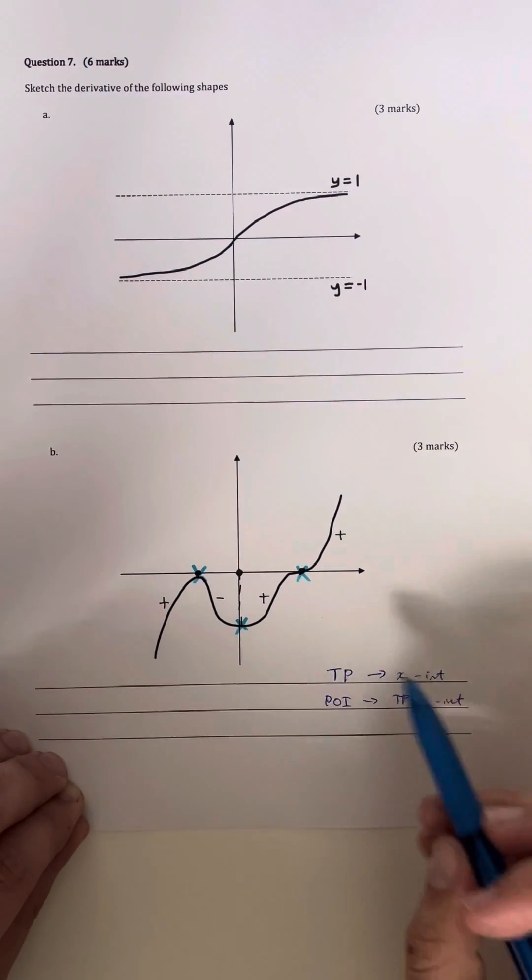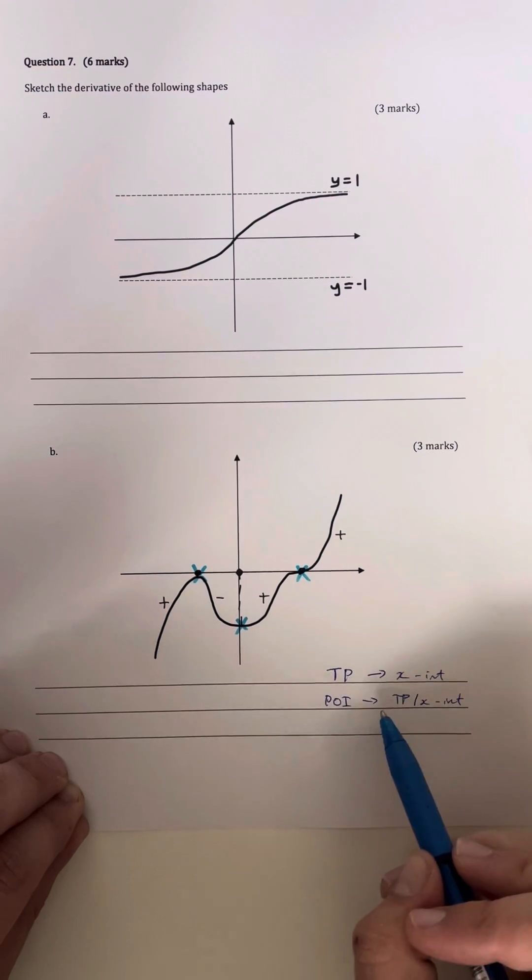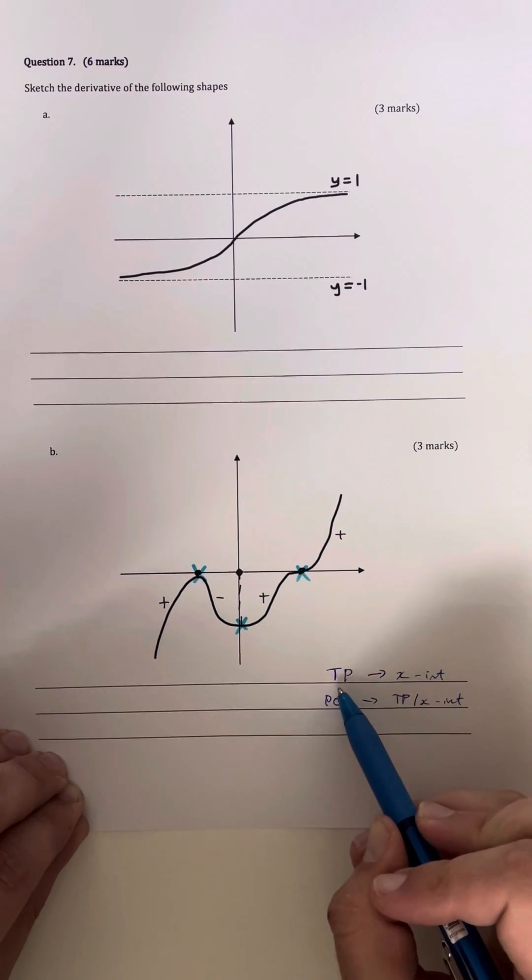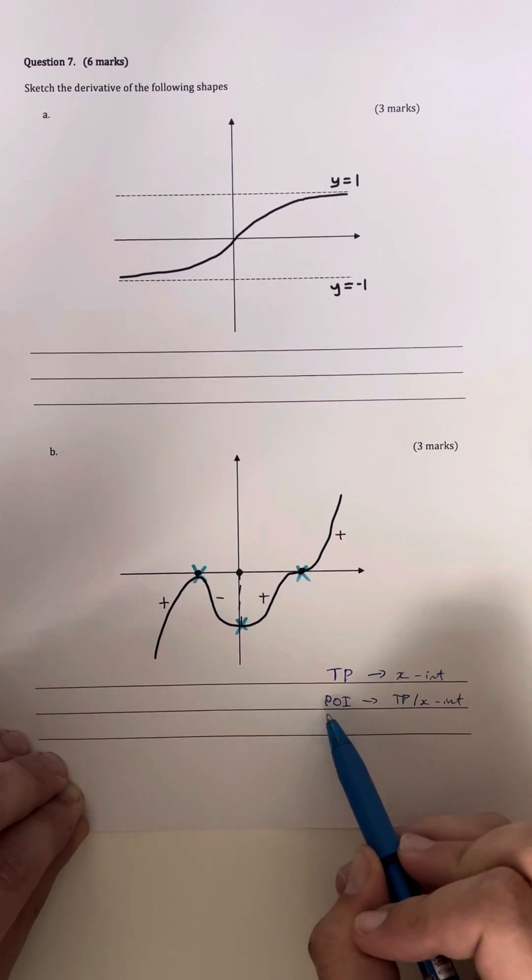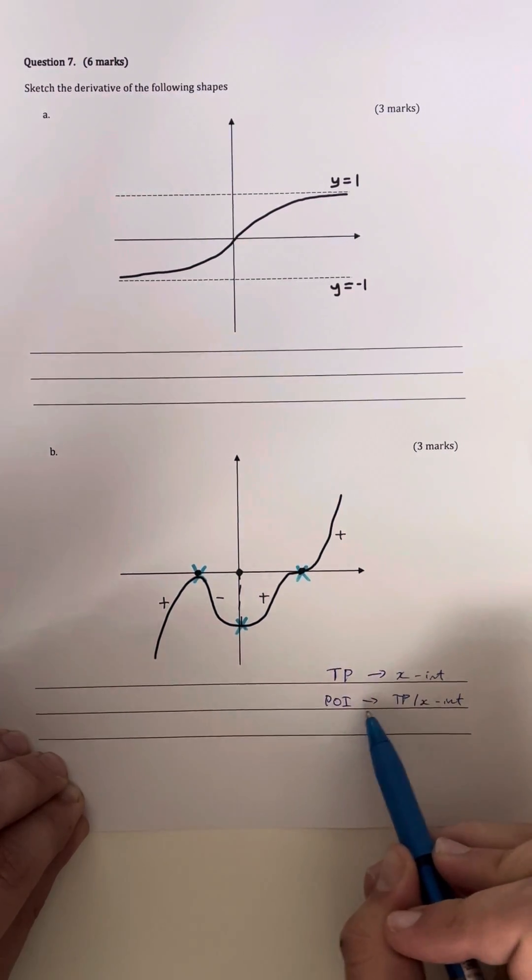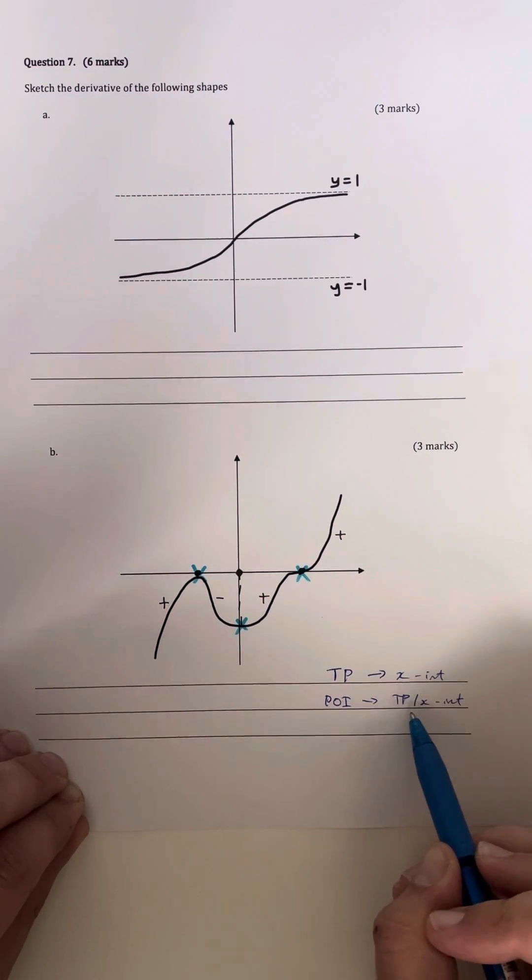Now the last thing I need to do is just note down where my turning points and points of inflection are, because this is really important. Turning points become x-intercepts, regular x-intercepts on my derivative curve. And points of inflection on my original function become turning points on my derivative curve, but are also turning points on the x-axis. And I'll show you how that looks on the graph now.